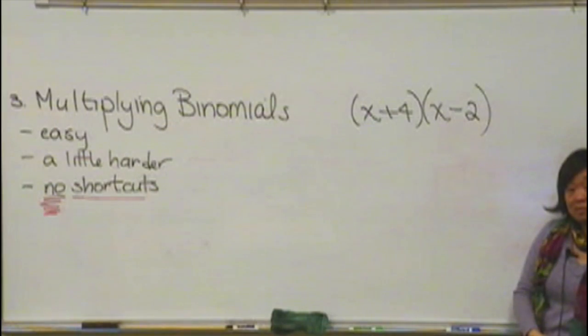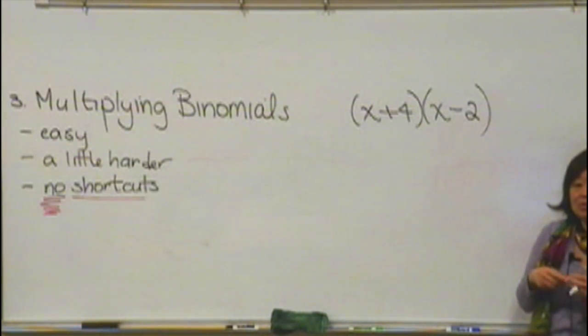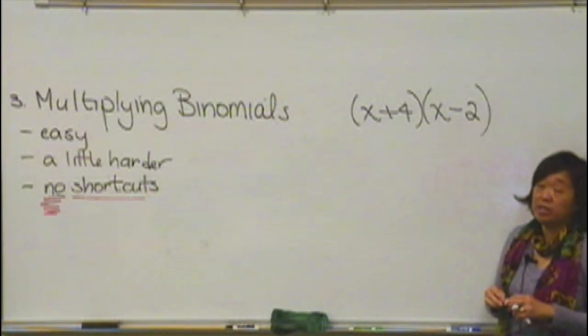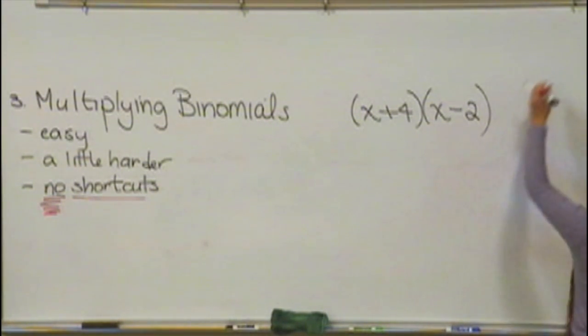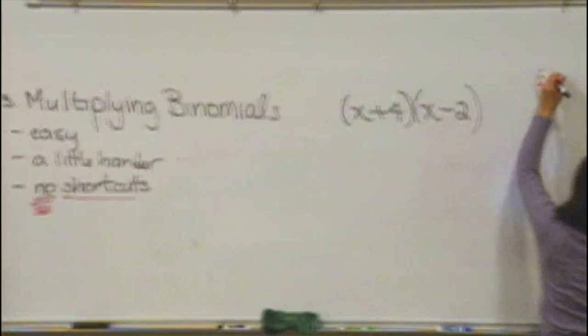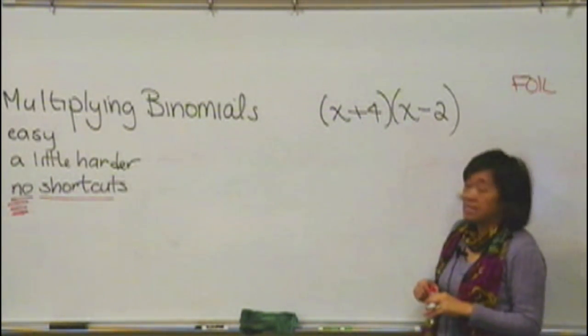Now, essentially, when you multiply two binomials together, you need to distribute twice. Often what I find is students who are taught this in high school have been taught an acronym or an abbreviation called FOIL. And so I'm going to do it that way with you because that might be familiar. FOIL stands for first, outside, inside, and last.